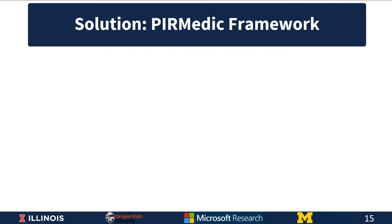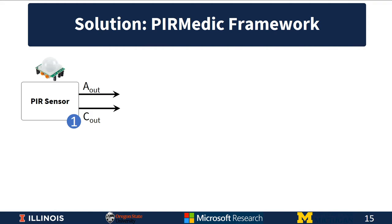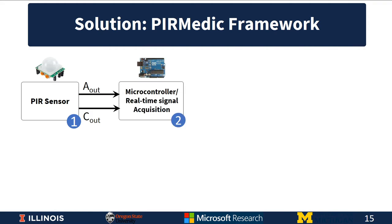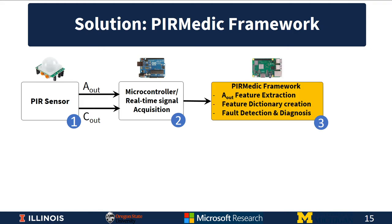With these insights, we develop our solution known as the PARmedic framework. The framework takes both analog and digital outputs from a PIR sensor, sent to a microcontroller or real-time signal acquisition device, then to a processing device where PARmedic resides. The framework consists of a feature extraction module, a feature dictionary creation module, and a fault detection and diagnosis module. The output is the class to which the sensor belongs — working or faulty — along with the type of fault if applicable. All components are commodity off-the-shelf.